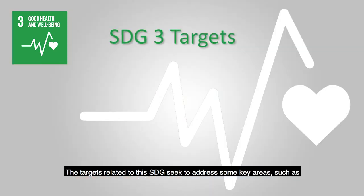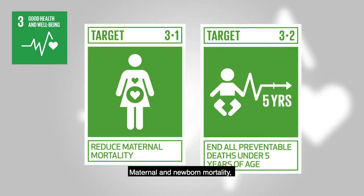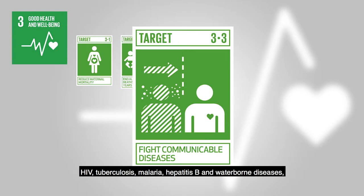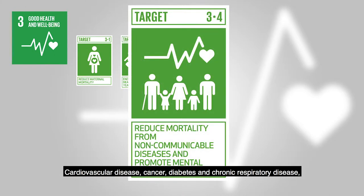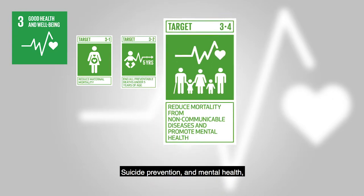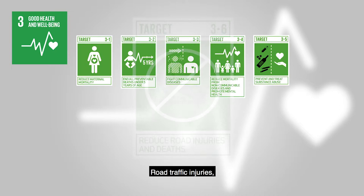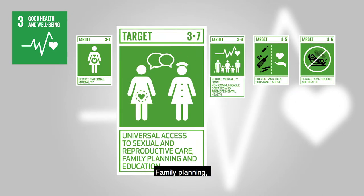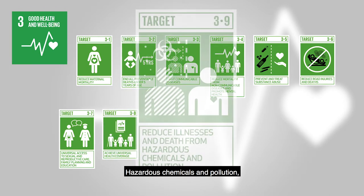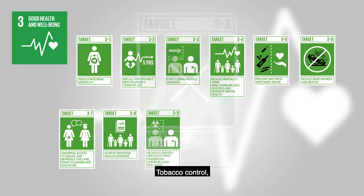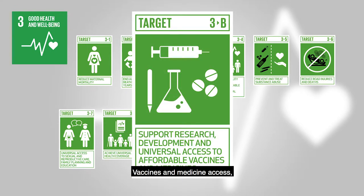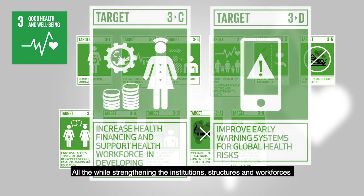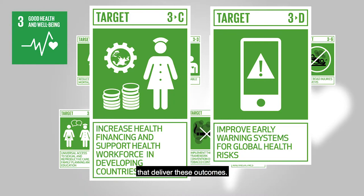The targets related to this SDG seek to address some key areas such as maternal and newborn mortality, HIV, tuberculosis, malaria, hepatitis B and waterborne diseases, cardiovascular disease, cancer, diabetes and chronic respiratory disease, suicide prevention and mental health, substance abuse, road traffic injuries, family planning, universal health coverage, hazardous chemicals and pollution, tobacco control, vaccines and medicine access — all the while strengthening the institutions, structures and workforces that deliver these outcomes.